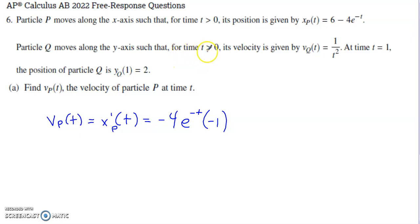This is only going to hold for times that are positive. Notice that we're given a velocity function here, so be cautious. We have a position function for particle P, but a velocity function for particle Q. They give us more information: at time one, the position of particle Q, the y-coordinate, is two.